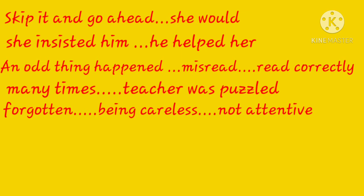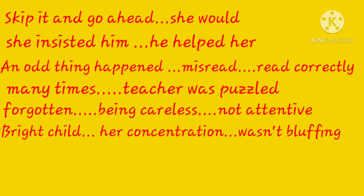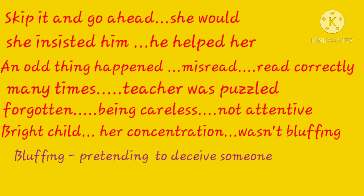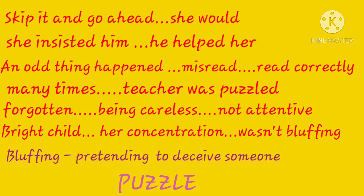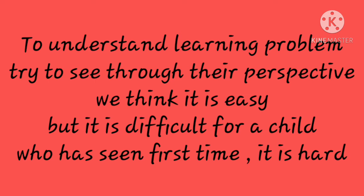The teacher tried to comprehend what the problem was with Nora. Had she forgotten things? Was she being careless or not paying attention? But no — he knew Nora was a bright child who was putting all her concentration into reading and wasn't bluffing. Bluffing means pretending in order to deceive. This was a puzzle for the teacher. The narrator means to say that in order to understand the learning problem of children, we must try to see things through their eyes and their perspective, not ours. Things may seem easy for adults, but for a child who has seen a word for the first time, it is not easy to recognize it.